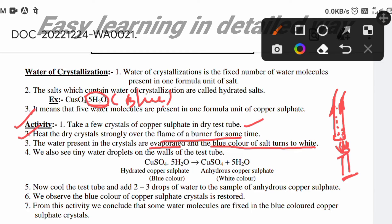The crystals turn into white color. We also see tiny droplets on the walls of the test tube. See the equation here: copper sulfate 5H2O, CuSO4·5H2O, gives rise to copper sulfate plus 5H2O — they separate out.